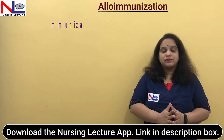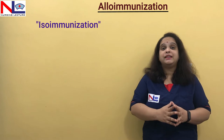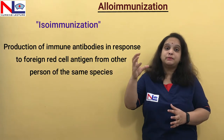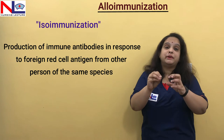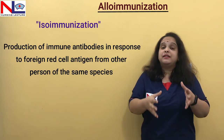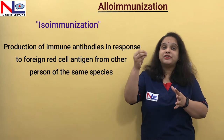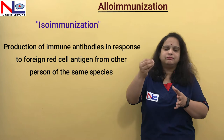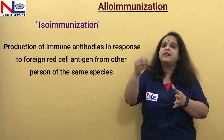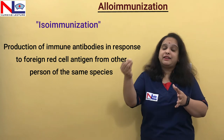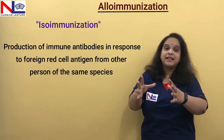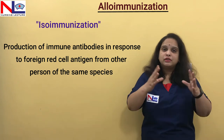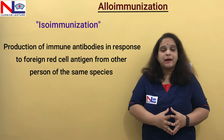So what is alloimmunization or isoimmunization? It simply means when the foreign antigen of the same species enters in another body, that body forms antibody against that particular antigen. Here, the foreign antigen is the fetus's Rh antigen. The mother and the fetus are human beings — the same species. So that foreign Rh antigen enters in the mother's body, the mother's immune response gets activated, it sensitizes and then forms antibody against that particular antigen. This is called alloimmunization or isoimmunization, and it happens because of fetomaternal bleeding or hemorrhage.